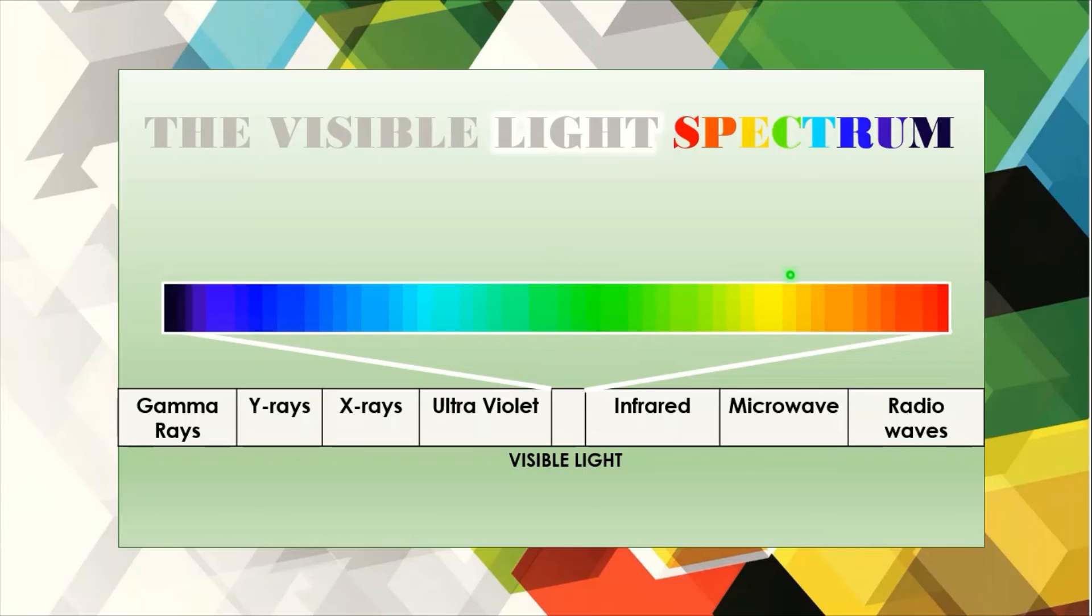So according to the chart, the color red, which proceeds to infrared, has a longer wavelength, and violet, which proceeds to ultraviolet, has a comparatively shorter wavelength.